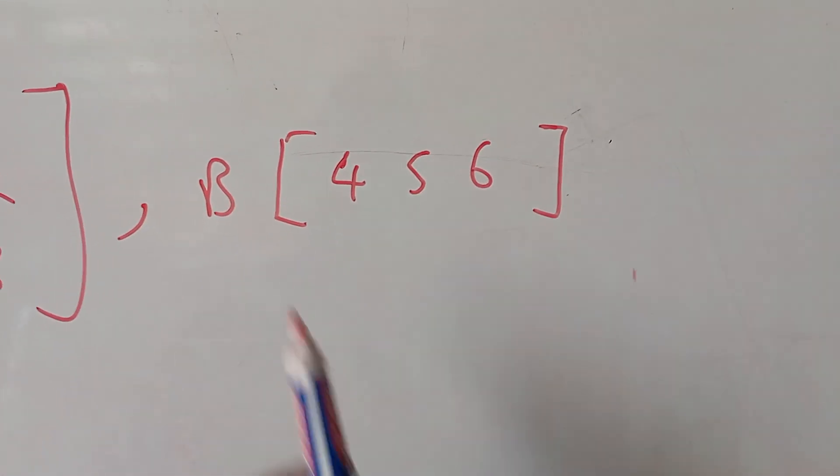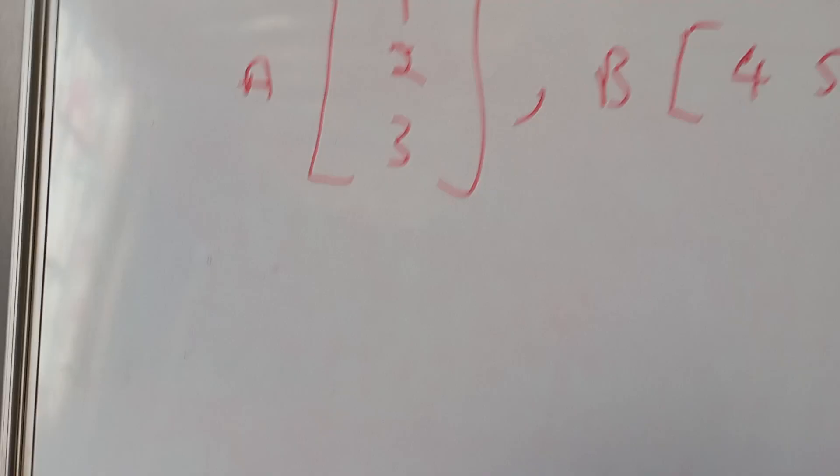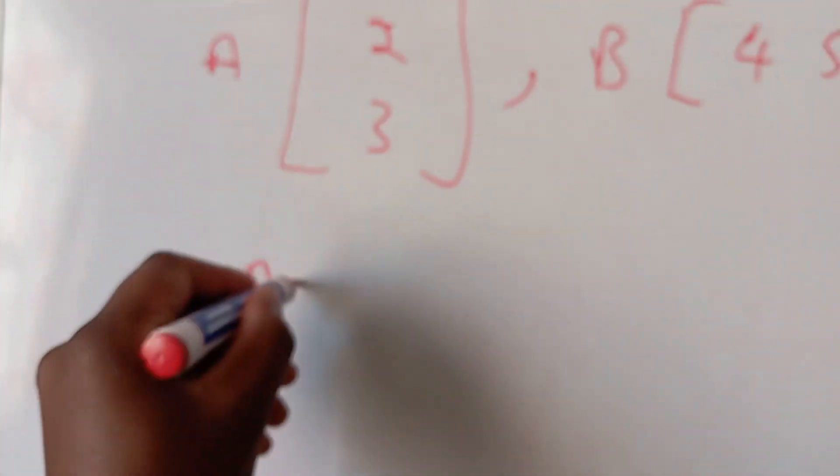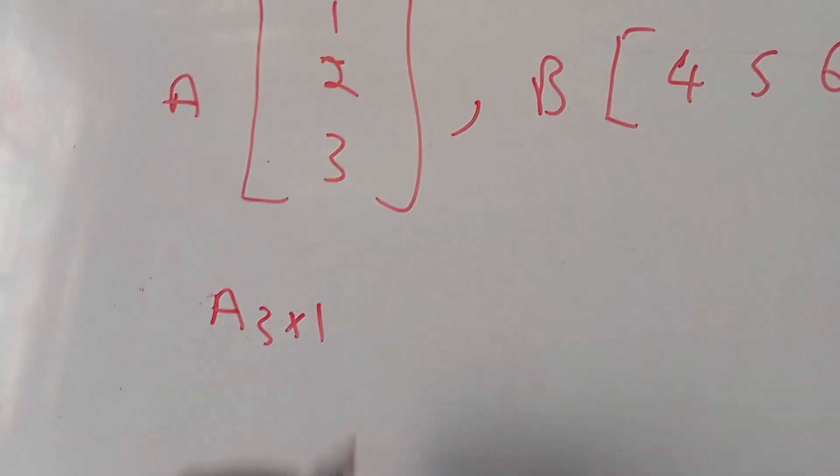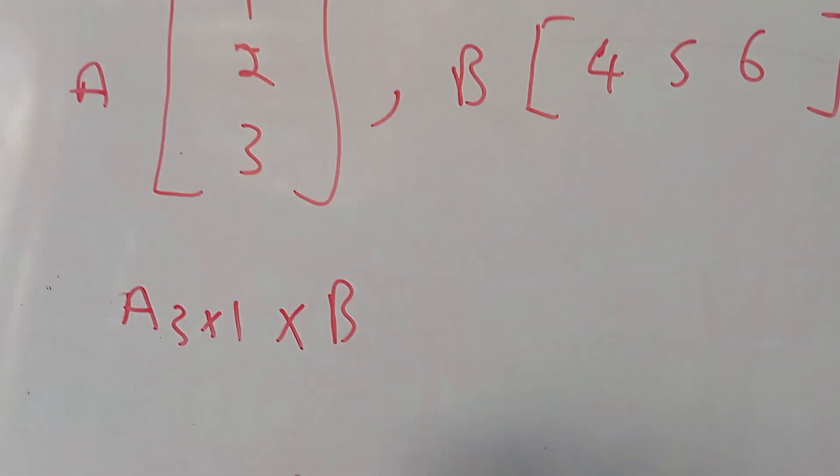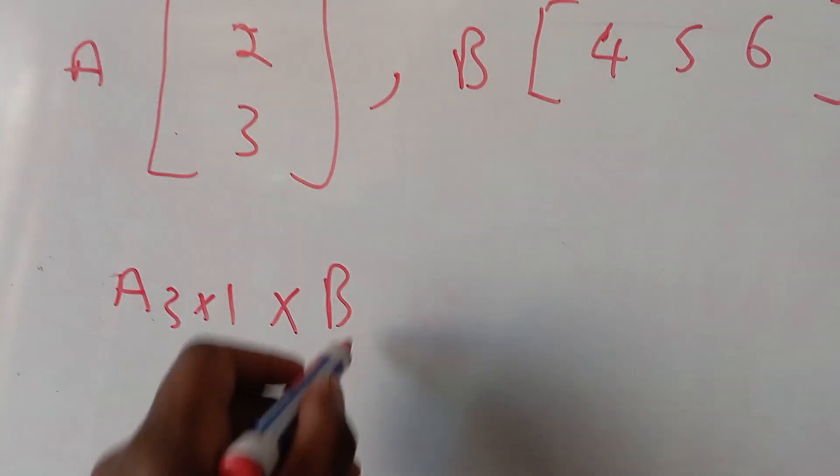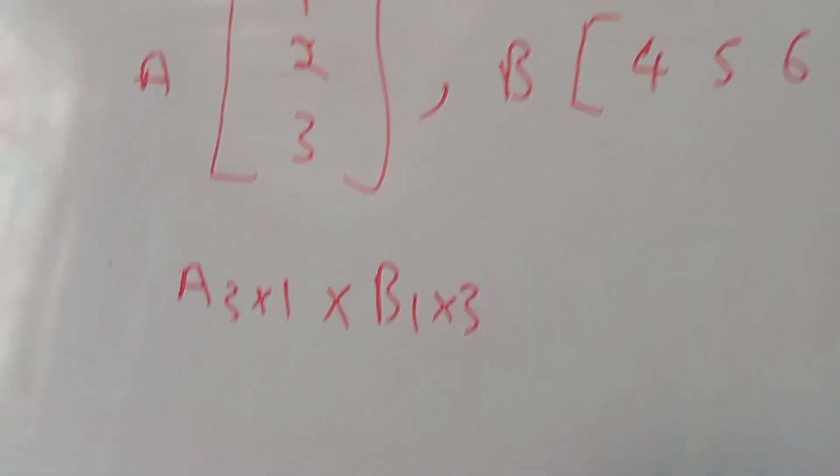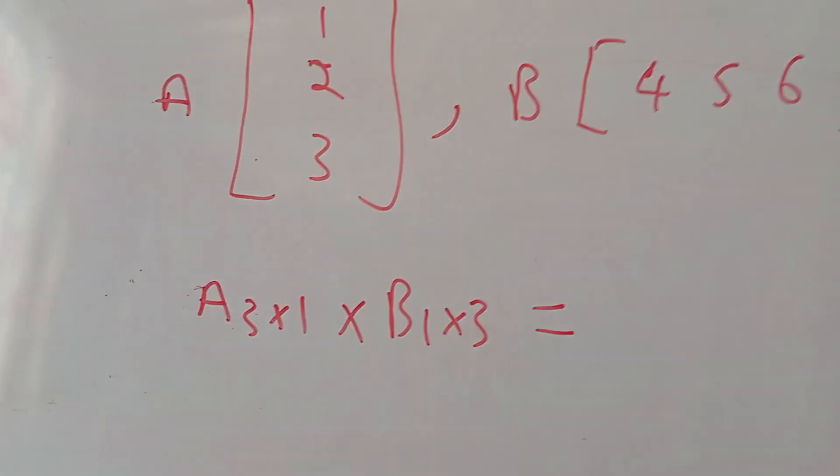And a 1 by 3 matrix, which means A is a 3 by 1 matrix times B, which is a 1 by 3 matrix, which is equal to...